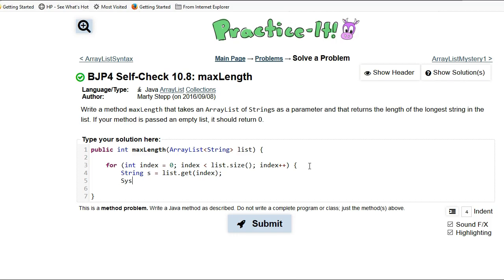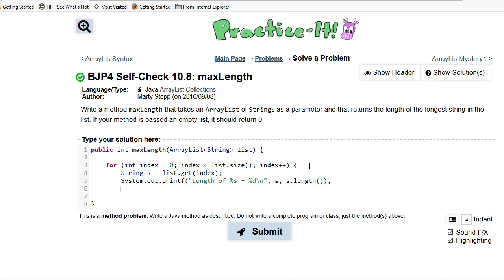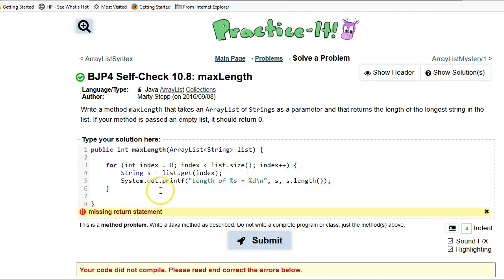And then I'm just going to do a System.out.printf. I'll actually do a formatted length of percent s equals percent d, and then I'm going to print out s and then s dot length. Alright, so this is not going to meet the problem's criteria.